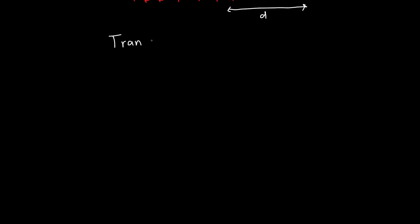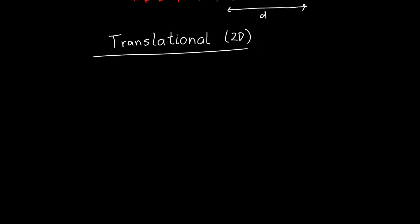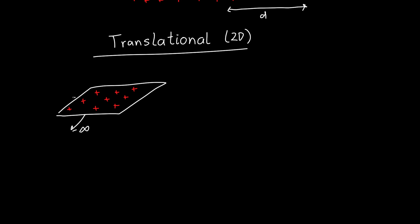Lastly, there's one other kind: 2D translational symmetry — translational symmetry in two dimensions. Examples include an infinite plane or an infinite sheet of charge.